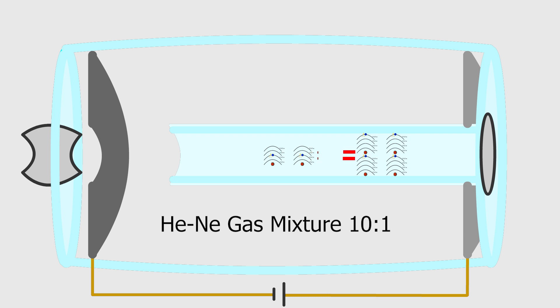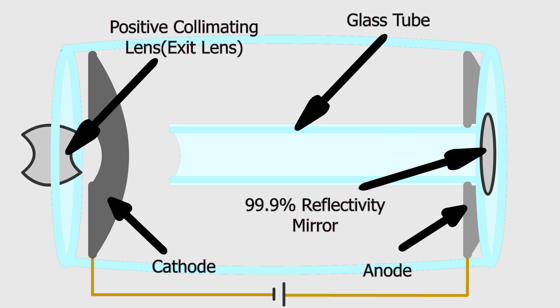The gas mixture used in the helium-neon laser is specially optimized. Helium atoms are easily excited to high energy levels during electrical discharge. This energy is then transferred to neon atoms, resulting in the production of laser light at a wavelength of 632.8 nanometers. Helium gas accelerates energy transfer, increasing the efficiency of the laser, while neon atoms form the active medium of the laser.